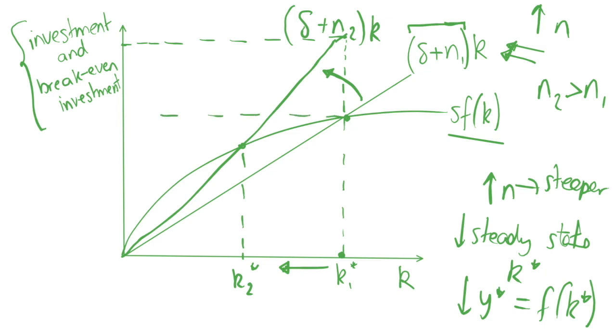Our break-even investment is up here, but our actual investment is only given by the SFK curve. To break even we'd need this much investment, but we have a lower amount of investment. That means that our capital stock declines, so we have a change in k less than zero, and we move this way. We keep moving this way until we get to the new steady state of k2 star. Obviously if we reduce the population growth, the opposite is true.